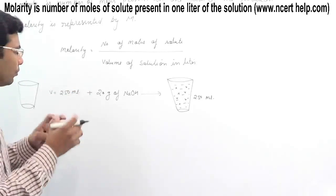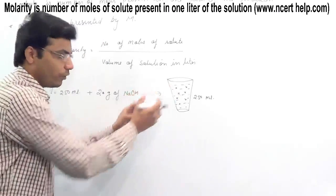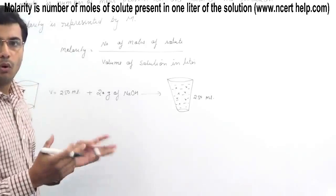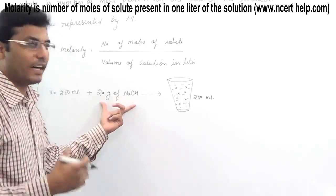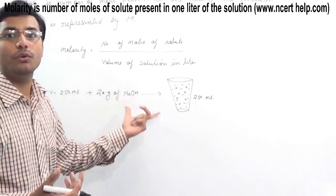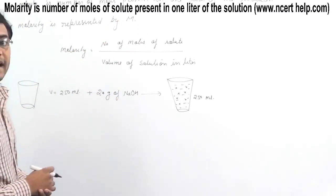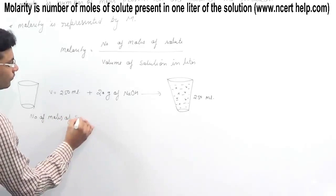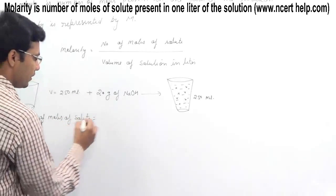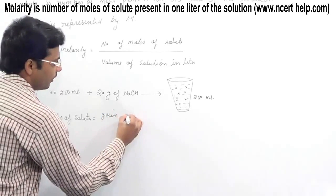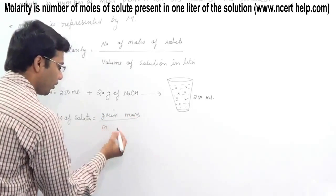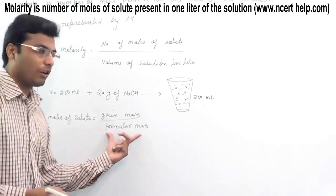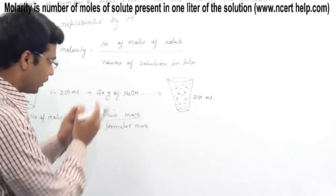To calculate the molarity of this solution, we need to find the number of moles of solute. The solute here is sodium hydroxide, as it is present in the lesser quantity. The number of moles of NaOH equals given mass divided by molecular or formula mass.